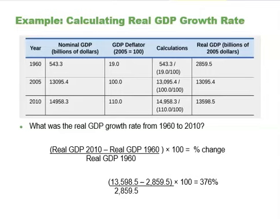Using these real GDP values, we can figure out the GDP growth rate by taking the later year's GDP minus the earlier year's GDP, dividing by the earlier year's GDP, and multiplying by 100 to get the percentage change. So we take real GDP in 2010 minus real GDP in 1960, divided by real GDP in 1960, times 100. The answer is a 376% increase in real GDP from 1960 to 2010.